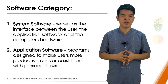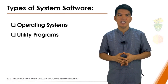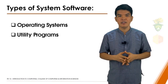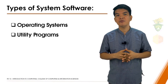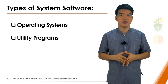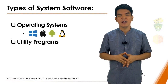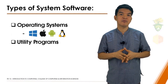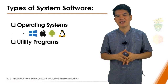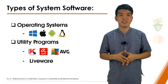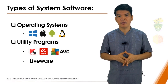Now let us go back to system software. There are two types of system software: the operating system and utility programs. The operating system is a set of programs that coordinates all the activities among computer hardware devices; it provides a means for users to communicate with the computer and other software. Many of today's computers use Microsoft's Windows 7 or 10, or Mac OS, Apple's operating system. A utility program allows a user to perform maintenance-type tasks, usually related to managing a computer, its devices, or its programs. For example, you can use a utility program such as antivirus software to detect and delete computer viruses and other malicious software from damaging your computer.